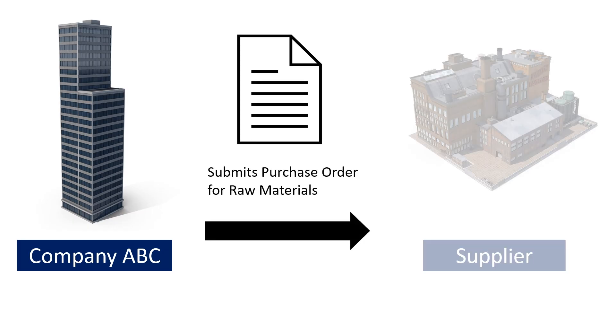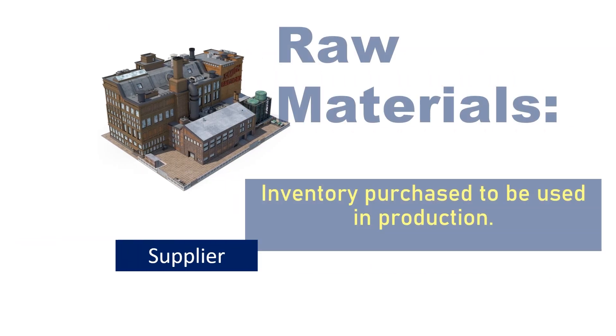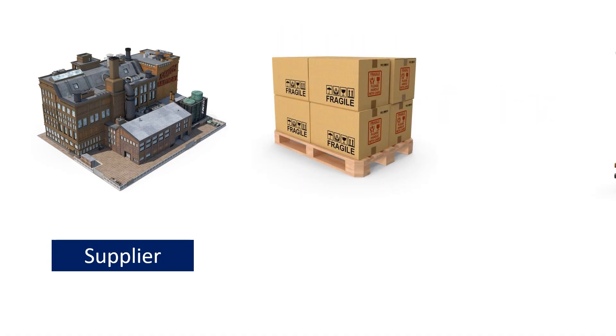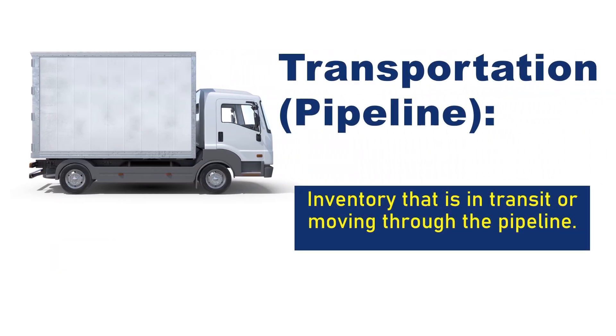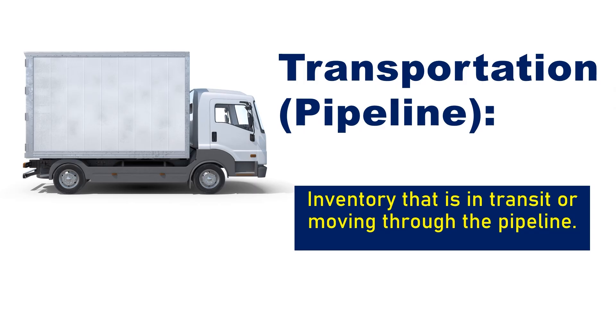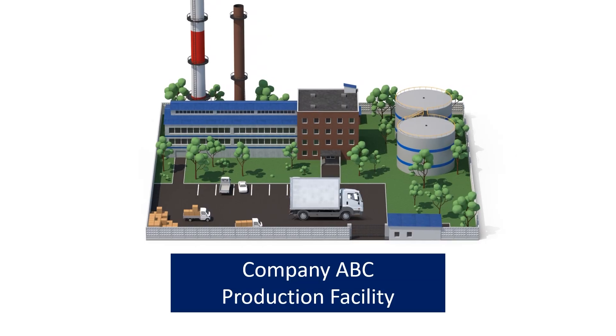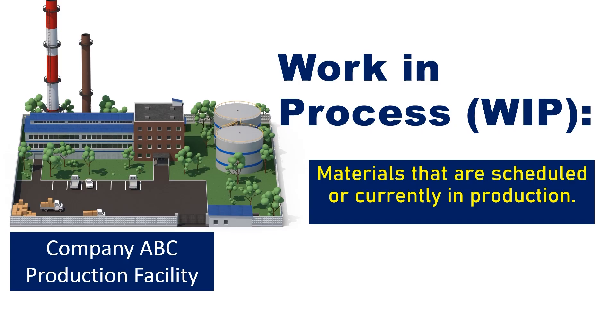There are a few different types of inventory I want you to know about — really, how inventory categorization changes over time. A company starts by ordering raw material from their supplier. Once the supplier ships that raw material, it actually becomes transportation pipeline inventory. Anytime inventory is moved, it is considered transportation pipeline inventory. Your company then receives the raw material, puts it into production to build the product, and that raw material becomes work in process inventory.